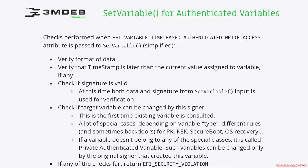What are the checks performed when using the time-based authenticated write access attribute? First, there is verification of the format of the data. Then there is verification of the timestamp — it is checked that the timestamp is later than the current value assigned to the variable, if there is any value assigned. Then there is a check if the hash signature is correct, and at this point both the data and signature from the set variable input are used for verification.